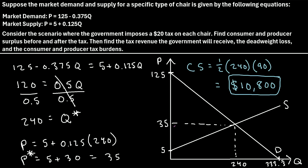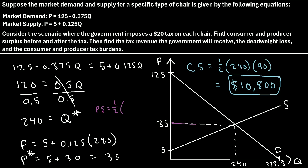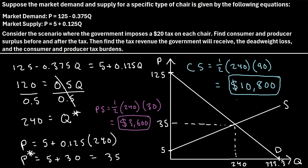The producer surplus is the area of this triangle — the area above the supply curve but below the market equilibrium price, up to the market equilibrium quantity. It represents all transactions where suppliers would have sold for less than $35 but get the benefit of selling at $35. Producer surplus equals 1/2 times base times height, so 1/2 times 240 times 30 — where 30 is 35 minus 5 — which comes out to $3,600. So here's our producer surplus and consumer surplus before the tax has been implemented.